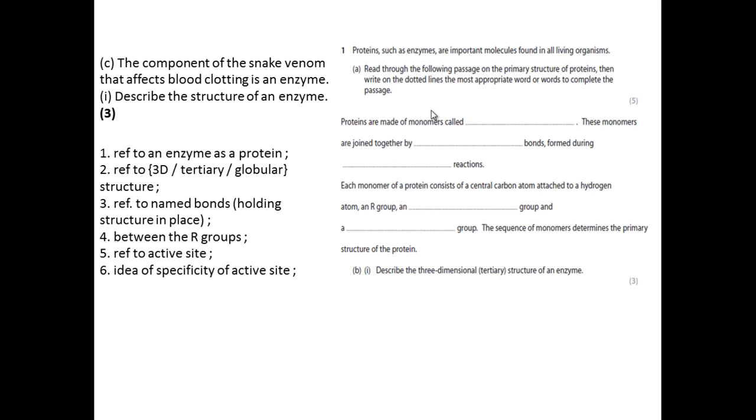Proteins are made of monomers called amino acids. These monomers are joined together by peptide bonds formed during condensation reactions as water is produced.